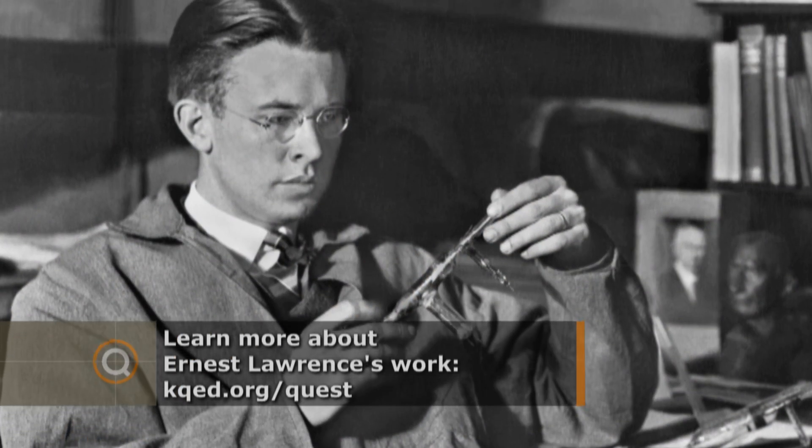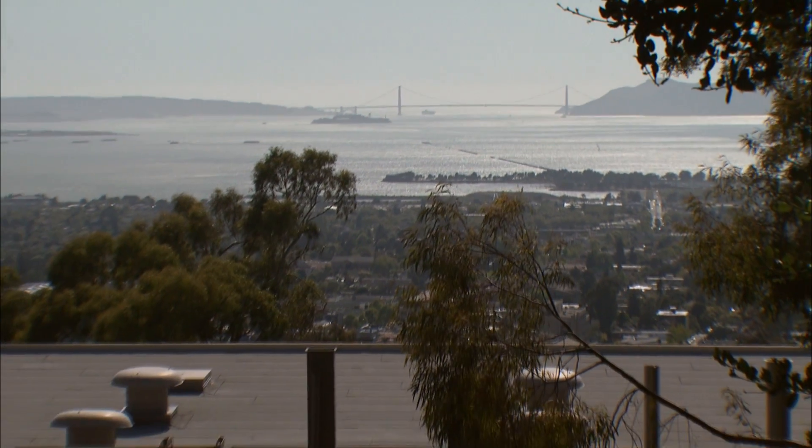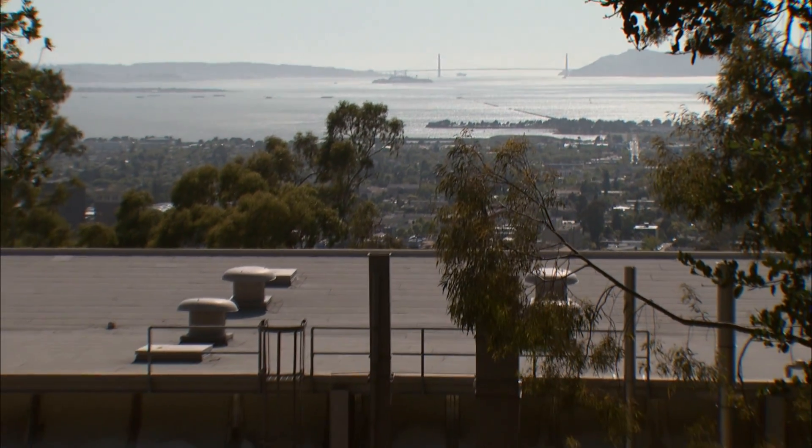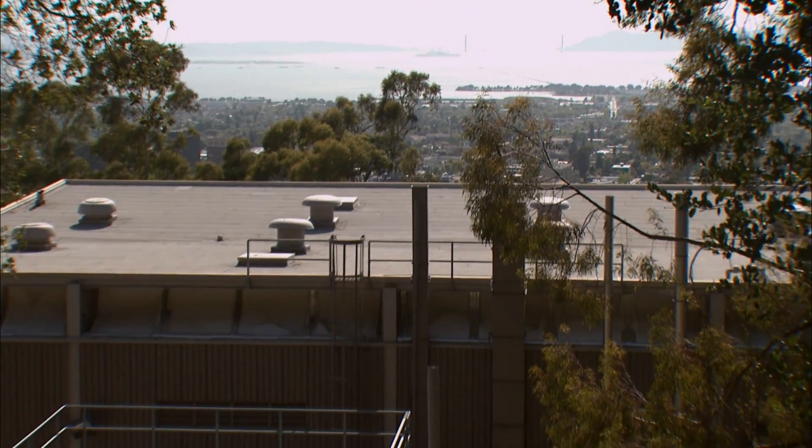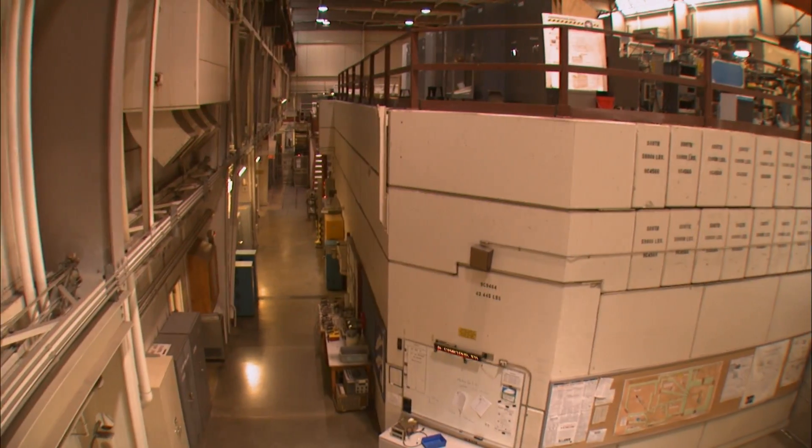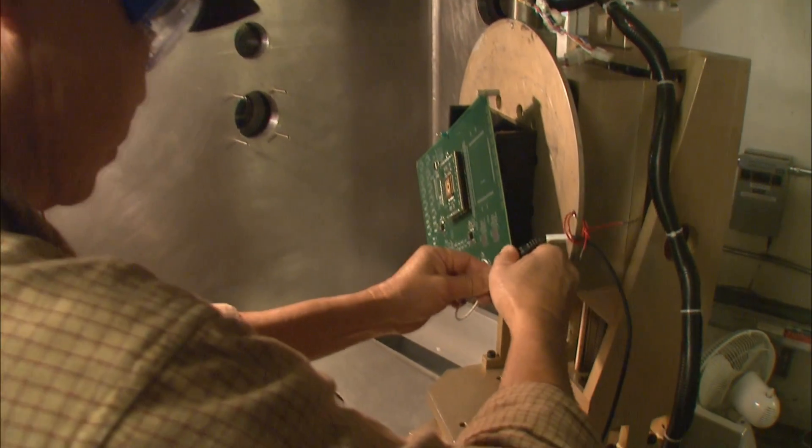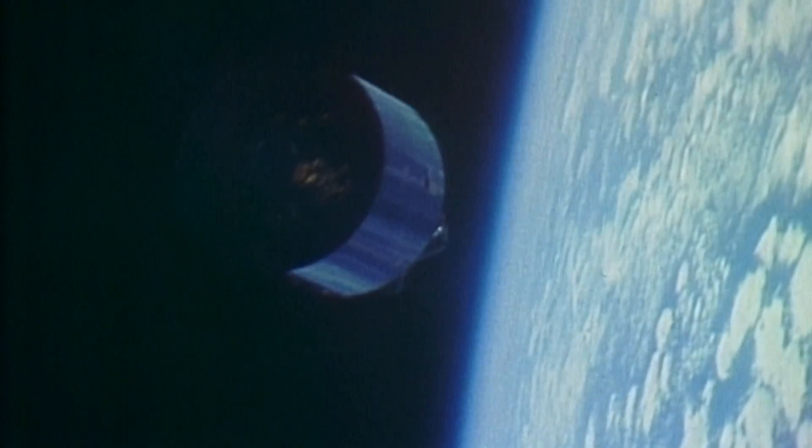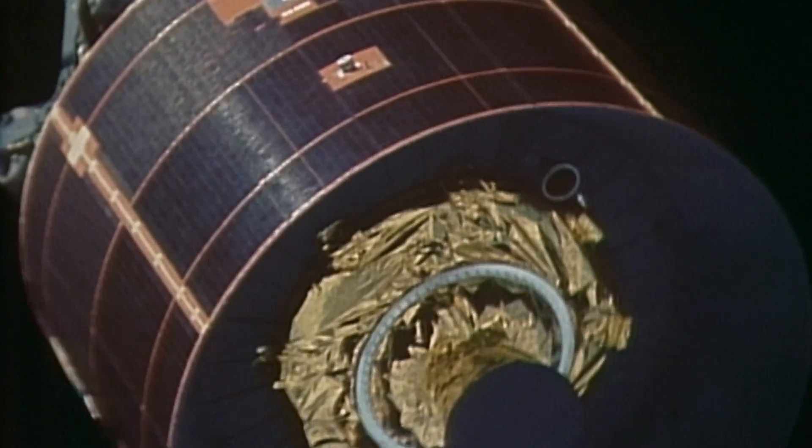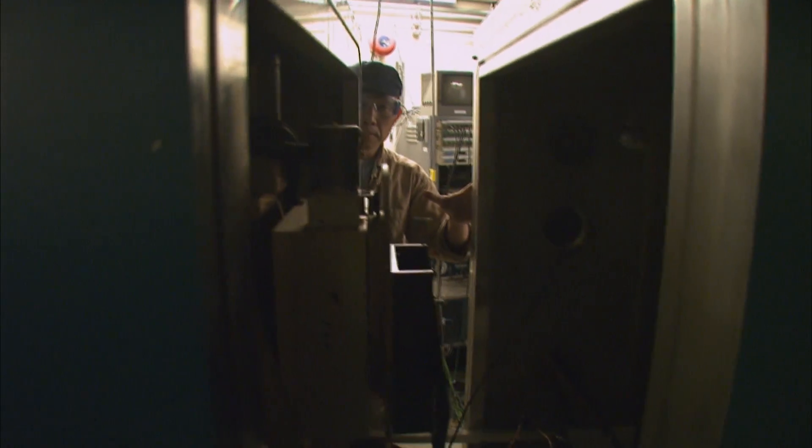For his invention of the cyclotron, Lawrence received the 1939 Nobel Prize in Physics. Today, the laboratory Ernest Lawrence started on the UC Berkeley campus is the Lawrence-Berkeley National Laboratory. Its cyclotron is one of two facilities in California used to test the computer chips that go into satellites. The cyclotron emulates the high radiation that satellite electronics encounter in space. To do so, they bombard the chips with charged atoms called ions.